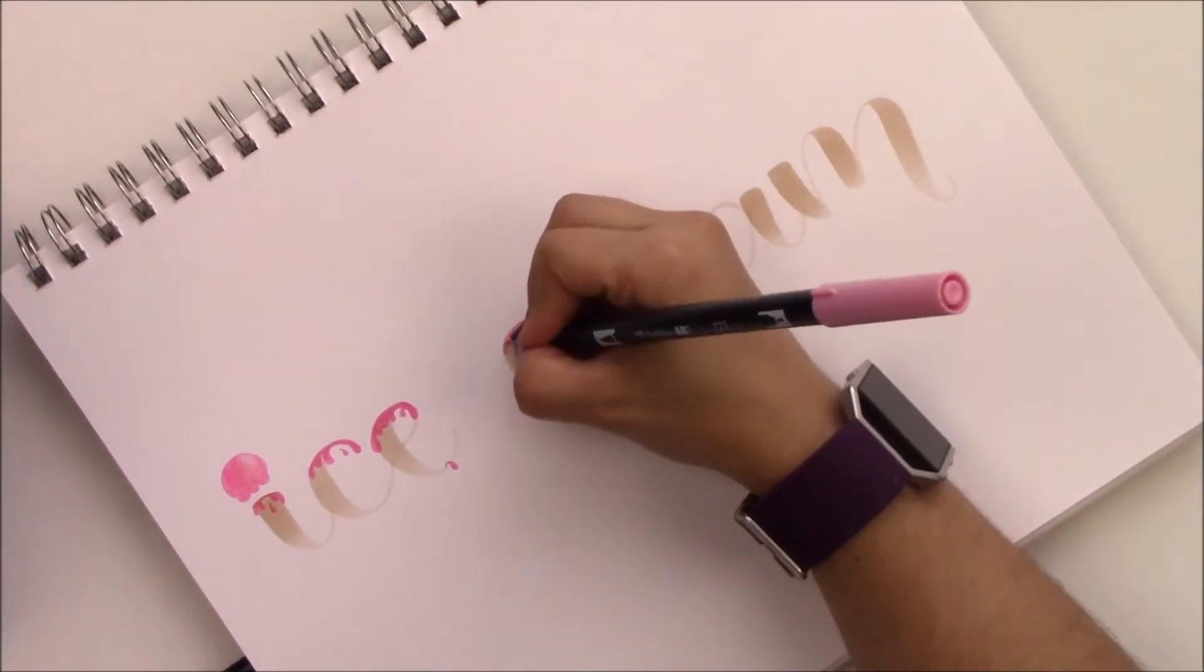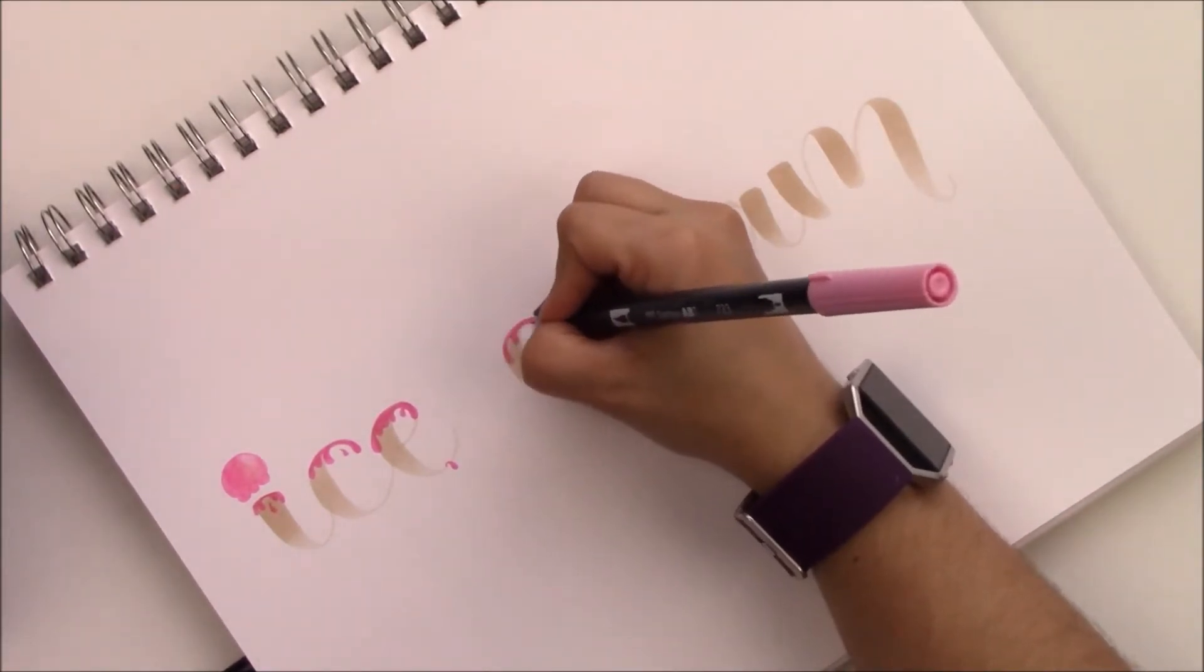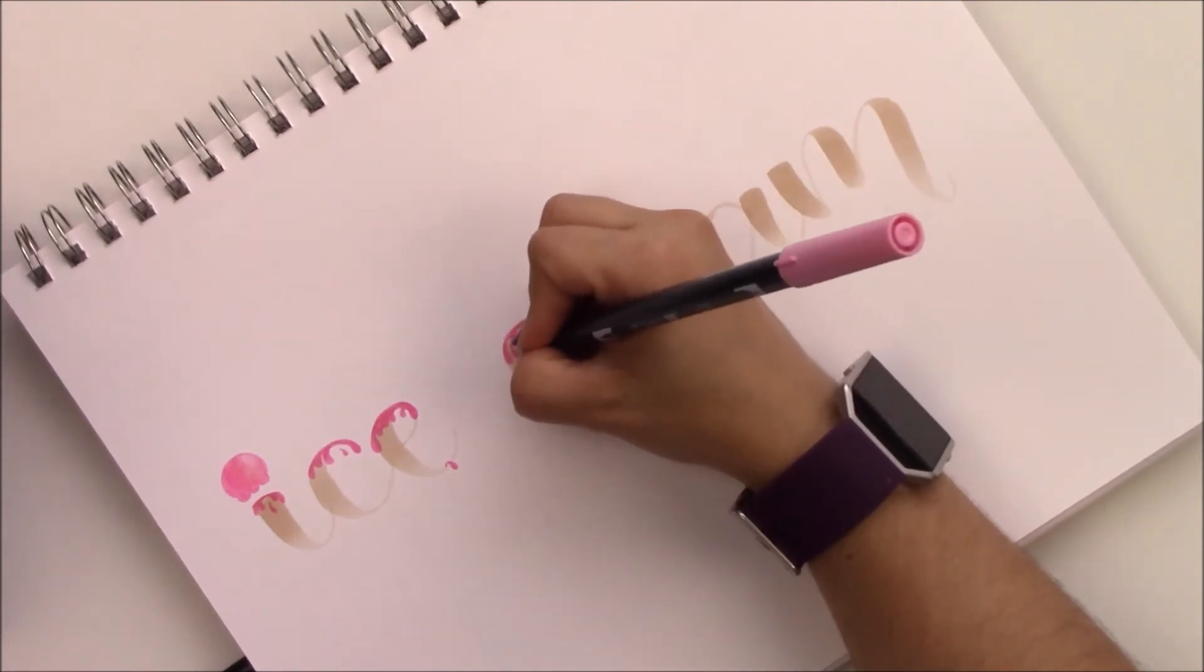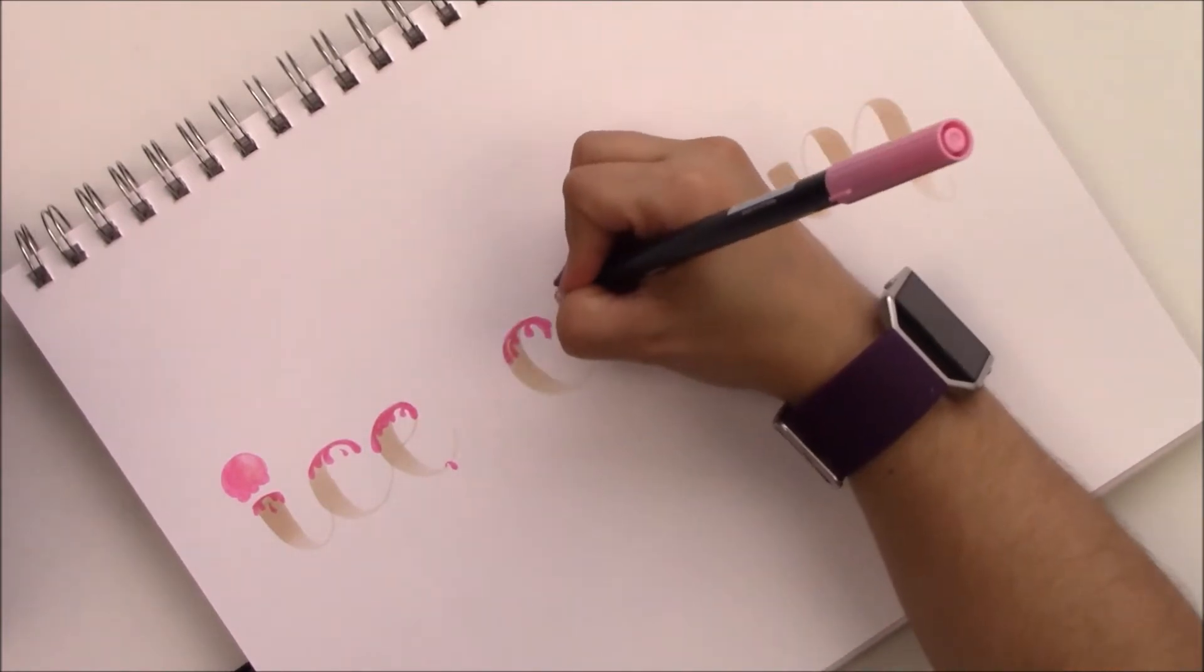You can also use the fine tip of the Tombow dual brush pens to do these drippings, but I like using the brush pen.